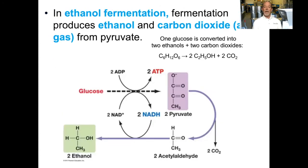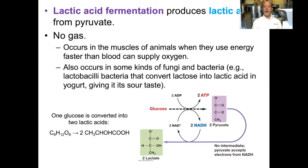In ethanol fermentation, the process produces ethanol and carbon dioxide from pyruvate. Glucose utilizes 2 ADP and 2 NAD+ to make 2 ATP and 2 NADH in glycolysis, producing 2 pyruvates. Those two pyruvates are then converted into CO2 and ethanol via acetaldehyde. A different form of fermentation is lactic acid fermentation, which produces lactic acid from pyruvate. Lactic acid does not produce a gas. It occurs in our muscles when they use energy faster than the blood can supply oxygen, and also in some kinds of fungi and bacteria.